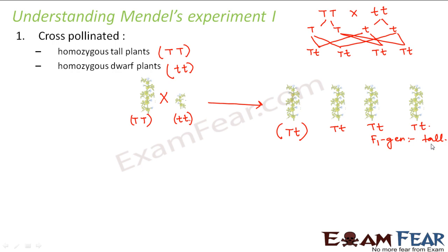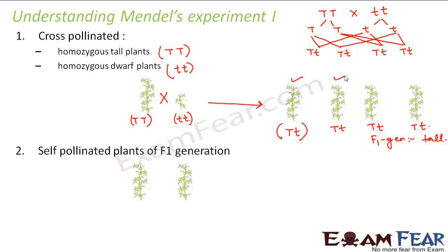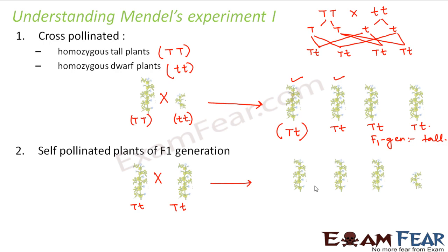At the same time, each of these F1 plants also has a dwarf trait hidden inside them. The dwarf is not expressed because it is a recessive trait, but it is still present. Next, Mendel self-pollinated the plants of the F1 generation. He found that only 75% of the plants were tall and 25% were dwarf. He was surprised at how the dwarf trait came back again.